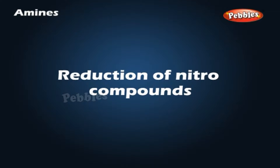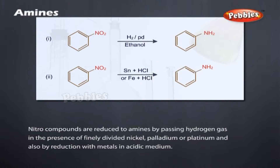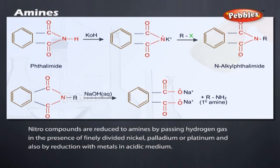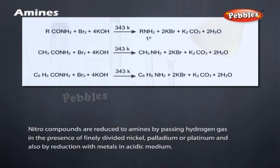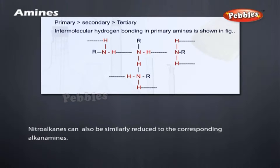Reduction of Nitro Compounds: Nitro compounds are reduced to amines by passing hydrogen gas in the presence of finely divided nickel, palladium, or platinum, and also by reduction with metals in acidic medium. Nitroalkanes can also be similarly reduced to the corresponding alkanamines.